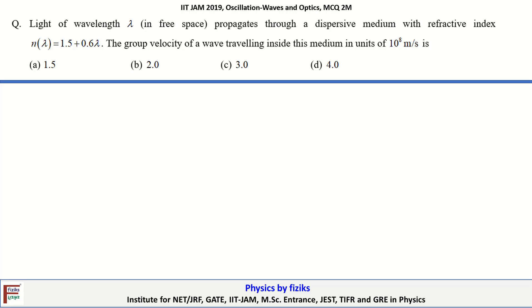In this question, a light of wavelength lambda propagates through a dispersive medium with refractive index n(λ) = 1.5 + 0.6λ. The question asks to calculate the group velocity of a wave traveling inside this medium in units of 10 to the power 8 meter per second.